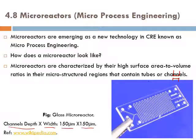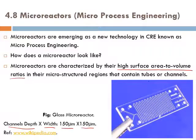Micro-reactors are characterized by their high surface area to volume ratios in their micro-structured regions that contain tubes or channels. The whole reactor consists of either a tube — circular — or a channel, like a rectangular channel. This reactor is characterized with its high surface area to volume ratio.